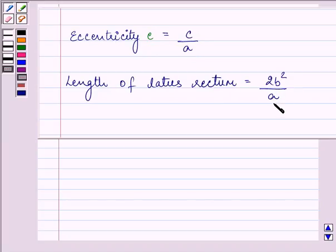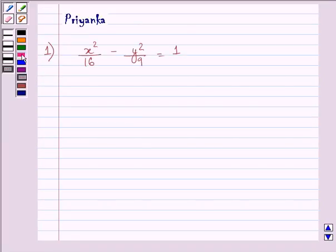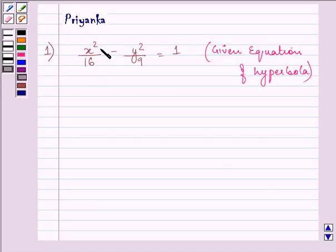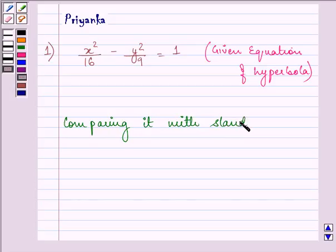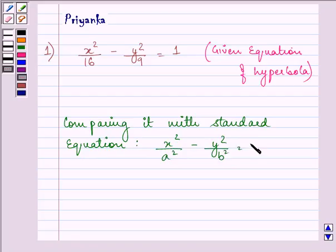Now, here the given equation of the hyperbola is x square by 16 minus y square by 9 is equal to 1. On comparing it with standard equation, that is x square by a square minus y square by b square is equal to 1.